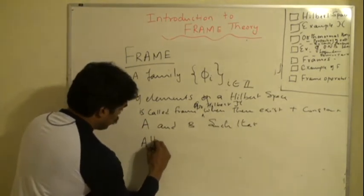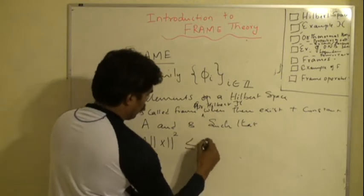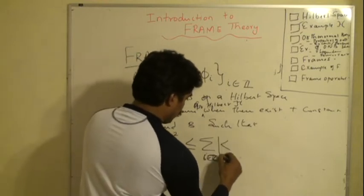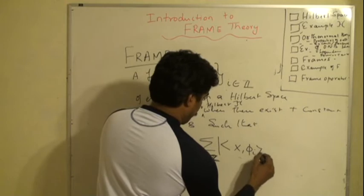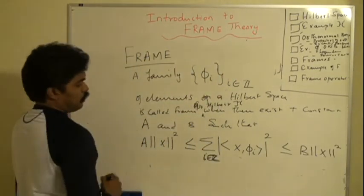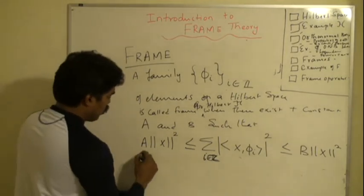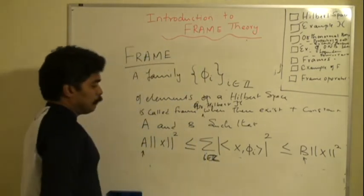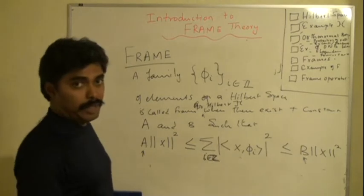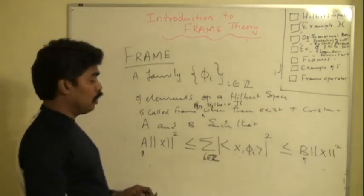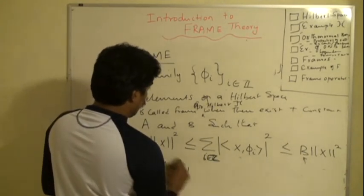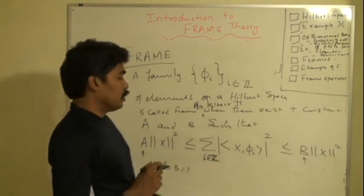Here a is called the lower bound and b is the upper bound. Basically, the frame ψ_i is bounded between a and b. When a is equal to b, it is called a tight frame. When a equals b equals 1, it becomes a Parseval identity, so it is called a Parseval frame.